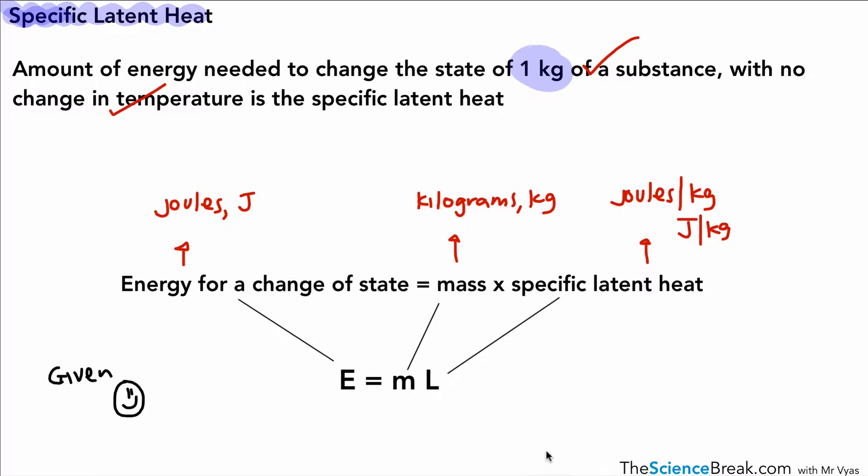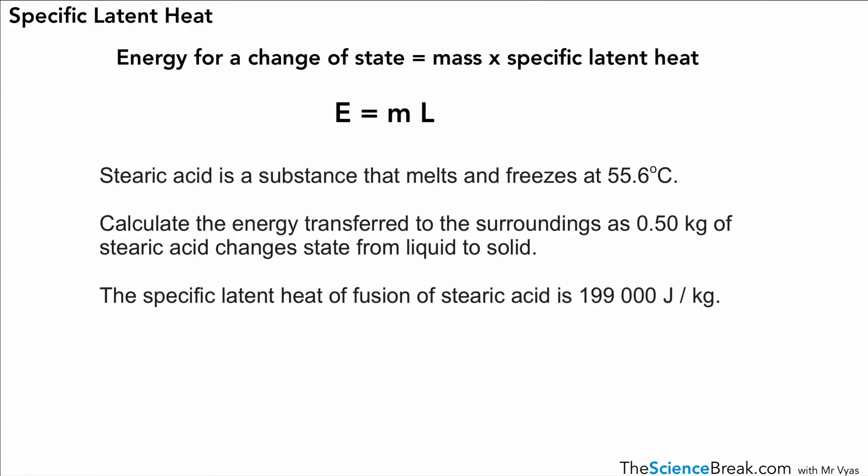Now we can use this to do an example. Here we have the equation at the top, which is going to be given to us. The example here says stearic acid is a substance that melts and freezes at 55.6 degrees Celsius. We want to calculate the energy transfer to the surroundings as 0.5 kg of stearic acid changes state from liquid to solid. So we're calculating energy transfer—that's E. We have the mass, so that's M, and we're also given the specific latent heat of fusion of stearic acid, so that's our L.